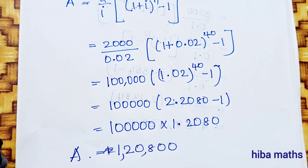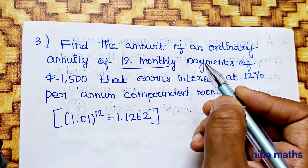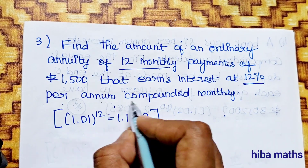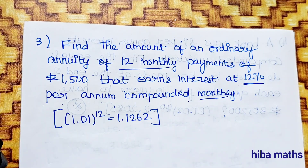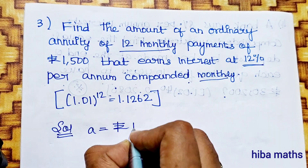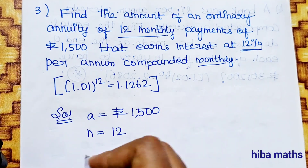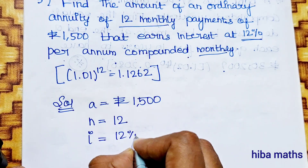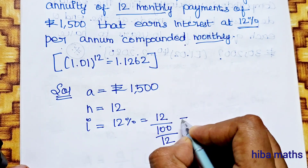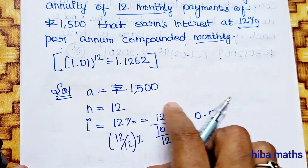Next, we need to find the minimum amount of purchase that earns interest at 12% per annum, compounded monthly. Since it is monthly, we divide by 12. The value a equals Rs.1500. The interest rate i equals 12% divided by 12, which equals 1% or 0.01 per month.